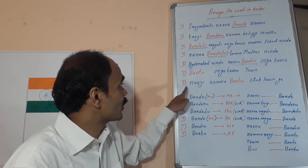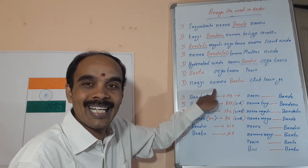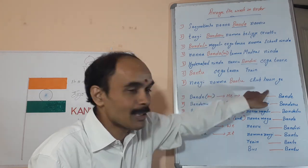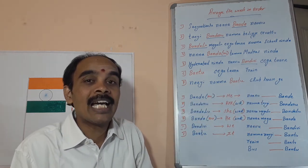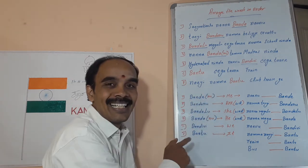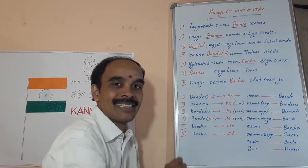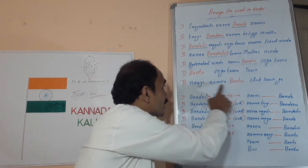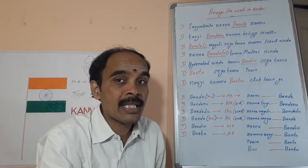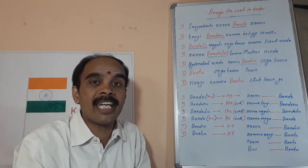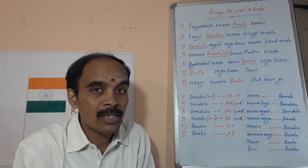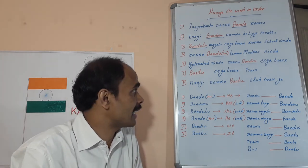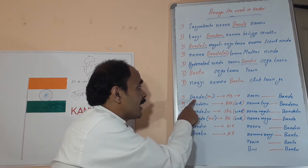The next one is: 'nai nama bantu clubhouse gay.' How to make the sentence? The answer is: 'nama nai clubhouse gay bantu.' 'Nai' is dog; 'gay' means 'to.' So 'our dog came to the clubhouse.' As I said, 'bantu' — 'it came' — can be applied for all things and animals. So here we used it for one animal. Now let's see a quick revision.